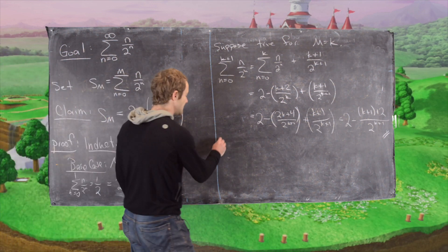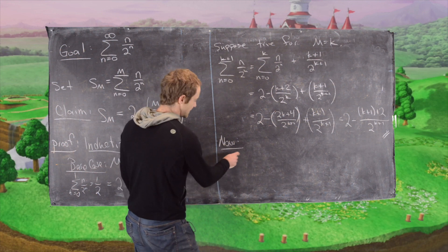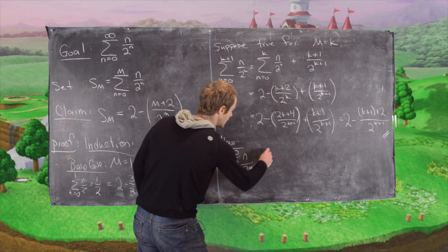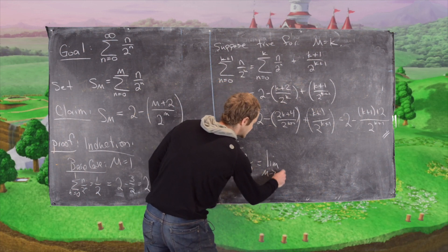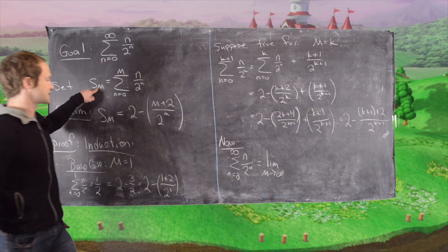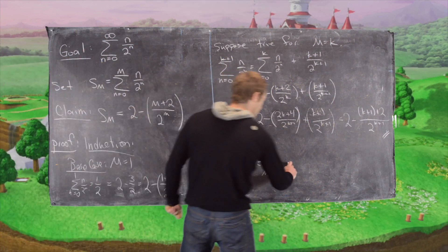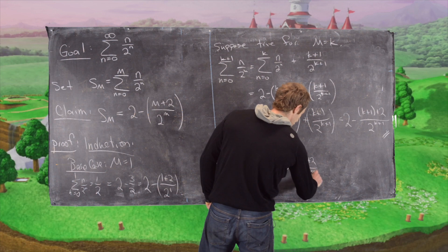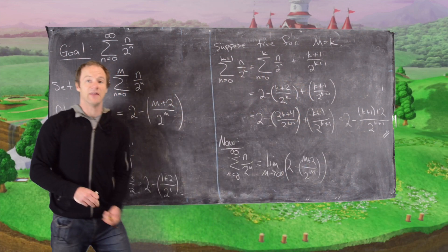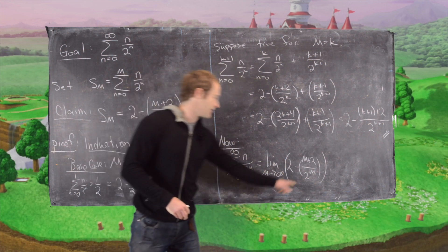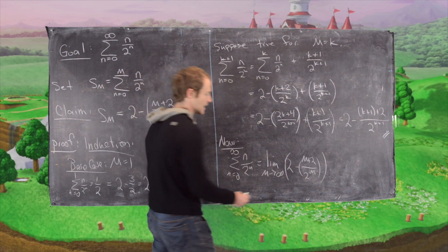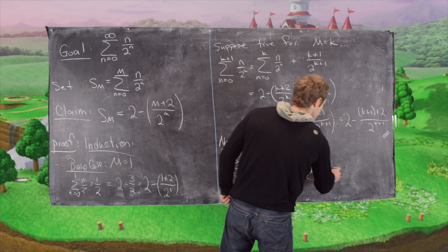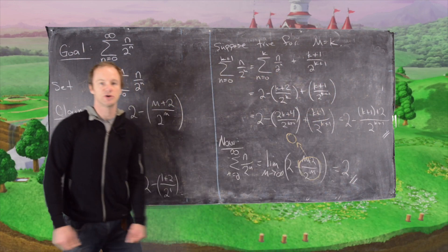We've proven the closed form of the partial sums by induction. So the sum n equals 0 to infinity of n over 2^n equals the limit as m goes to infinity of 2 minus (m+2) over 2^m. Since the exponential dominates the polynomial upstairs, (m+2) over 2^m goes to 0, giving us a final answer of 2.